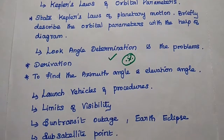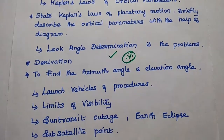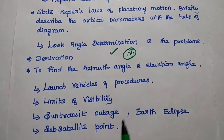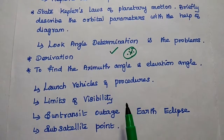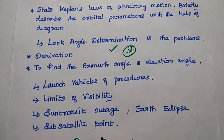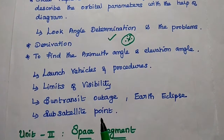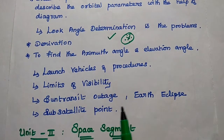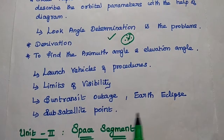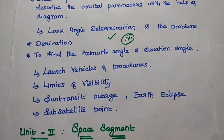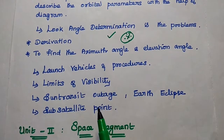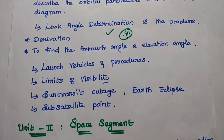Launch vehicles and procedures — we can expect this question for 16 marks or 13 marks. Topics such as limits of visibility, sun transit outage, and sub-satellite point are all Part A questions.